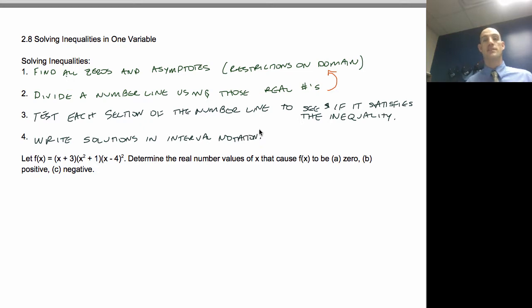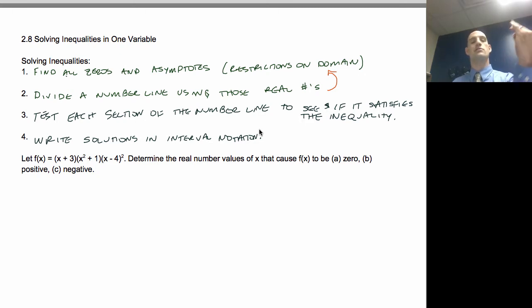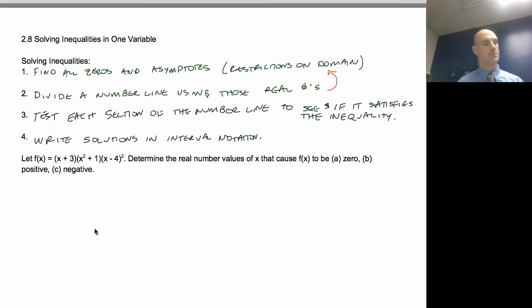Some of this is new, some of this is old. The old stuff is finding the zeros and the asymptotes, and the new stuff would be dividing the number line and testing those intervals to write our answer.